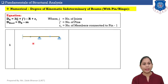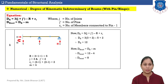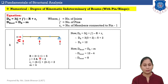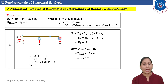The given beam has 3 supports — 1 fixed support and 2 roller supports — and the beam has 2 pins. Number of reactions: fixed support gives 3, each roller gives 1, so total R equals 3 plus 1 plus 1 equals 5. Number of joints J equals 3. Number of pins J' equals 2.